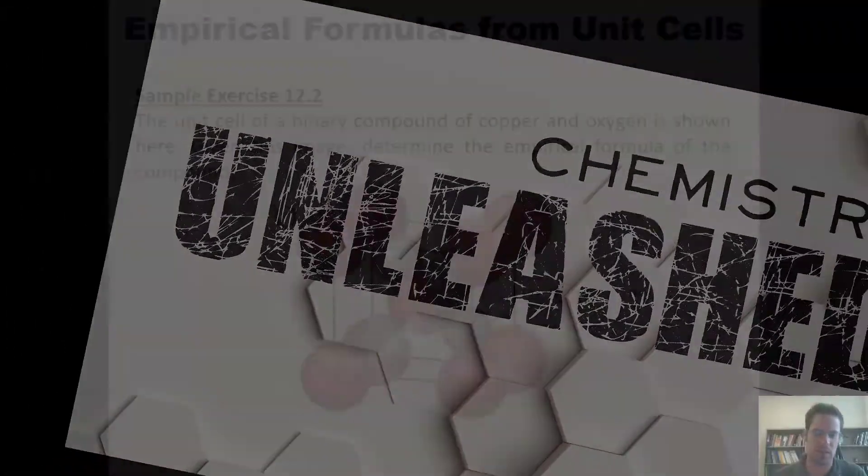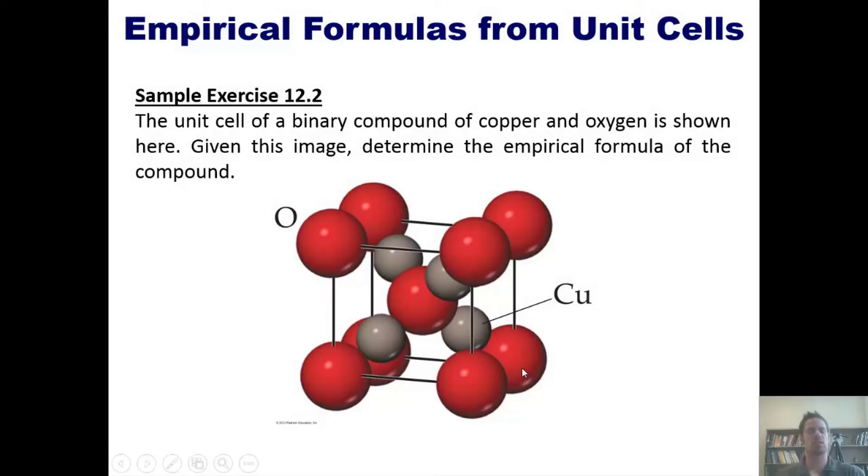This question gives us the unit cell for this binary compound and asks us to determine its empirical formula. You'll notice that this unit cell has a bunch of oxygens in each of the four corners. In fact, that bunch turns out to be eight oxygen atoms exactly.